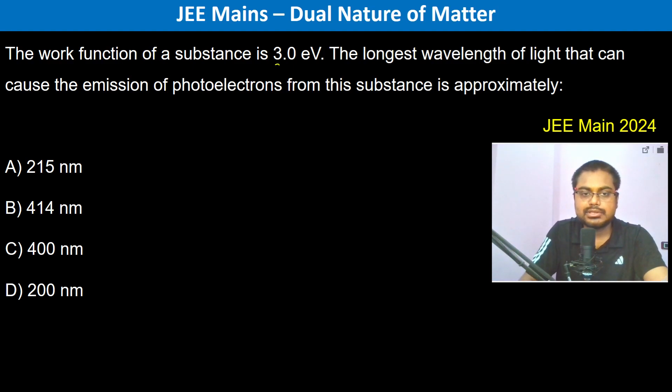The work function of a substance is 3 electron volts. The longest wavelength that can cause the emission of photoelectrons is going to be: hc by lambda equals 3 electron volts. So therefore, 6.6 into 10 to